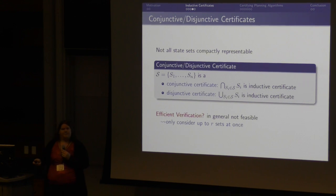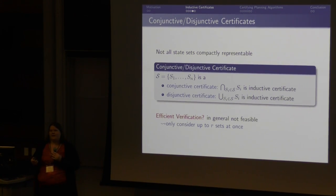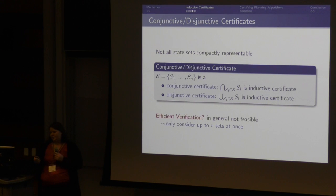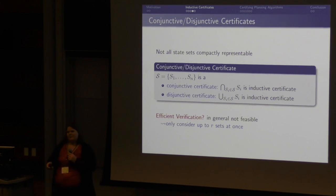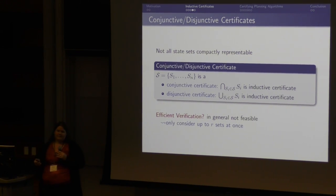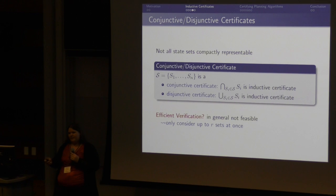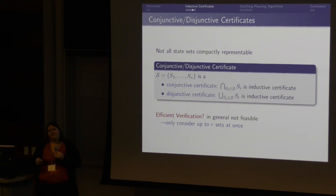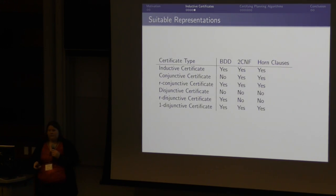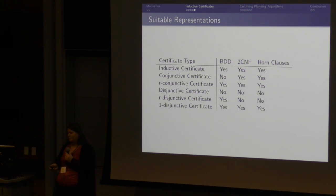There is one big problem with conjunctive or disjunctive certificates: usually we cannot efficiently verify whether the state set is actually an inductive certificate because we need to explicitly build this union or intersection again, and we lose all the advantage. So we came up with one more type of certificates, which we call R-conjunctive or R-disjunctive certificates, where the idea is that during verification we need only to build an explicit union or intersection of up to R sets at once — for example, only two sets at once. I will not go into the details here.